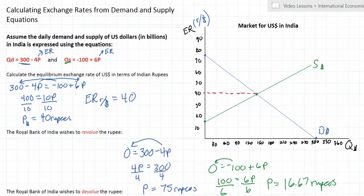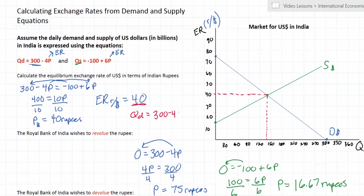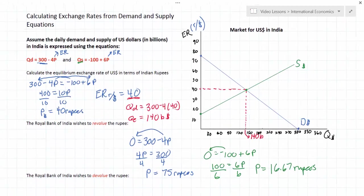The equilibrium quantity I haven't calculated yet, but I can estimate it at around 130–140 billion dollars demanded and supplied. Let's calculate it by plugging our equilibrium exchange rate into the demand equation: Qd equals 300 minus 4 times 40, so equilibrium quantity equals 300 minus 160, which is 140 billion dollars. And sure enough that's what we can see from the graph — at 140 billion dollars per day this market is in equilibrium. So we've just shown how to calculate the equilibrium exchange rate using linear supply and demand equations and how to plot the curves on a forex market graph.